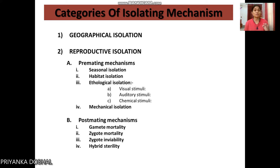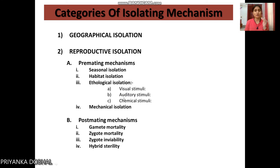The second is habitat isolation, and the third is ethological isolation. Ethological isolation means that the behavior of a population isolates it from another. It can involve a visual stimulus — a particular species doesn't feel attracted to another species — or an auditory stimulus, or chemical stimuli. We also call this behavioral isolation.